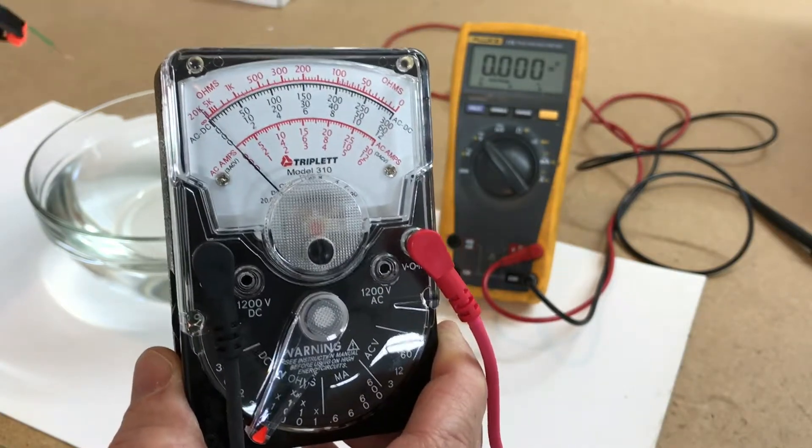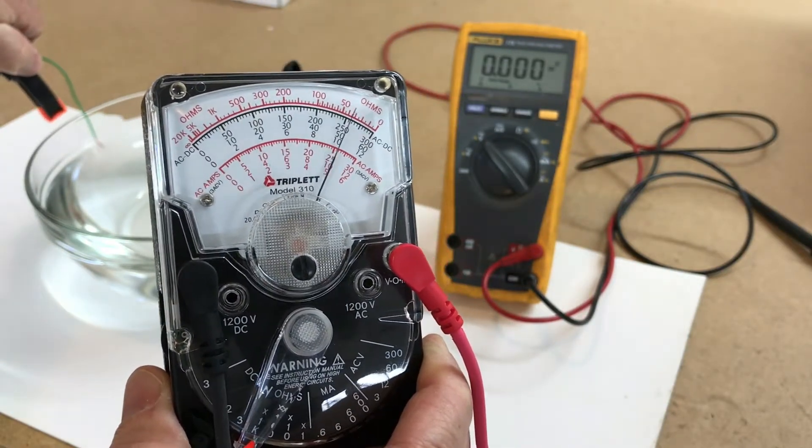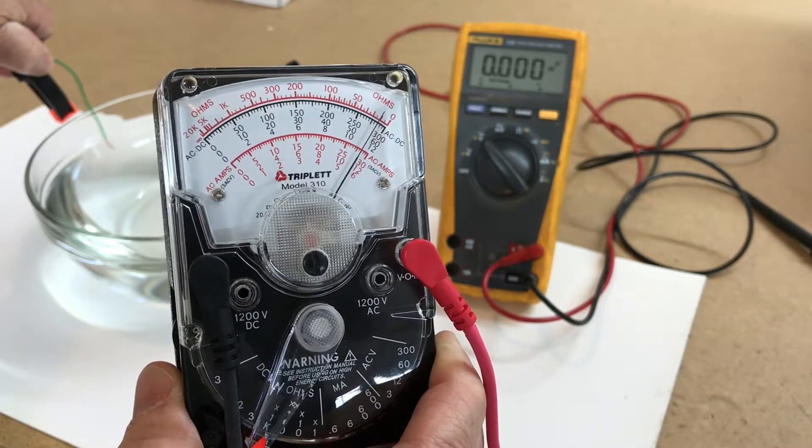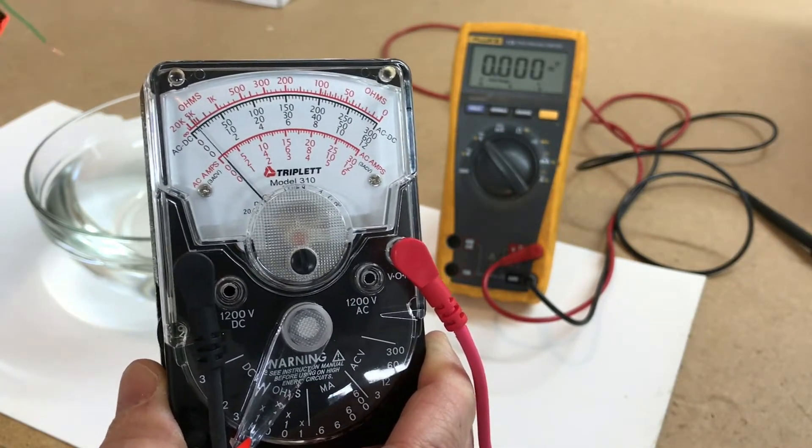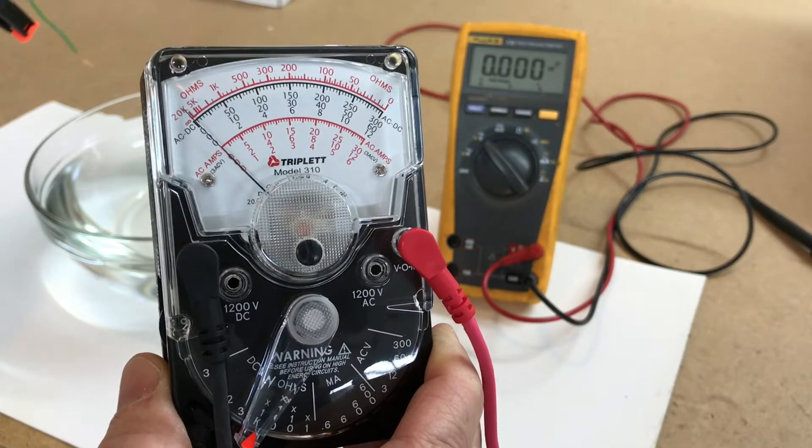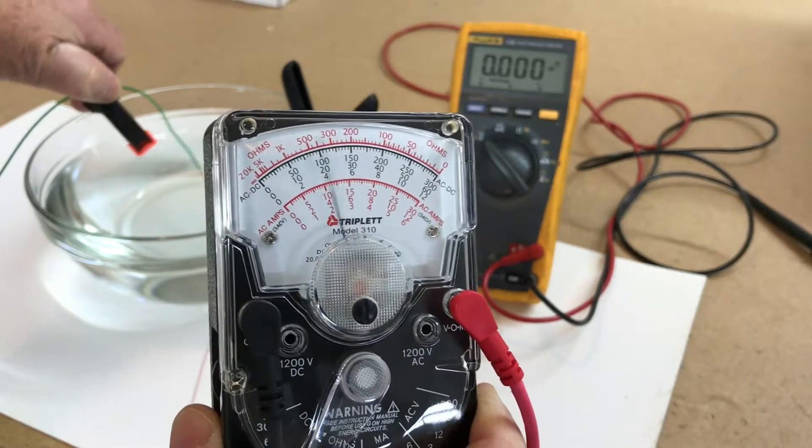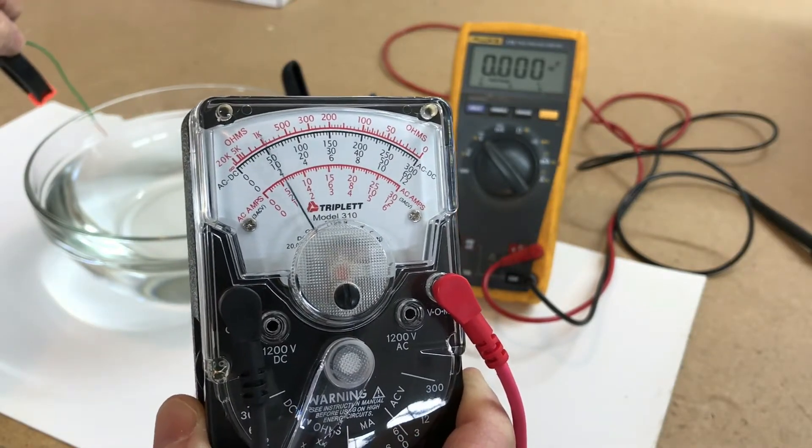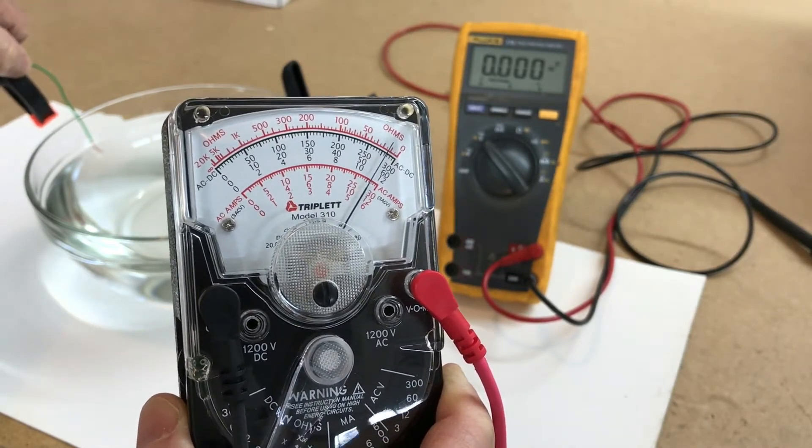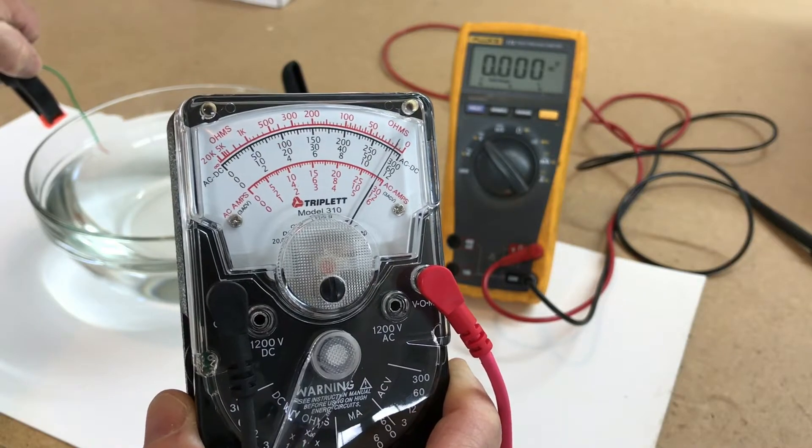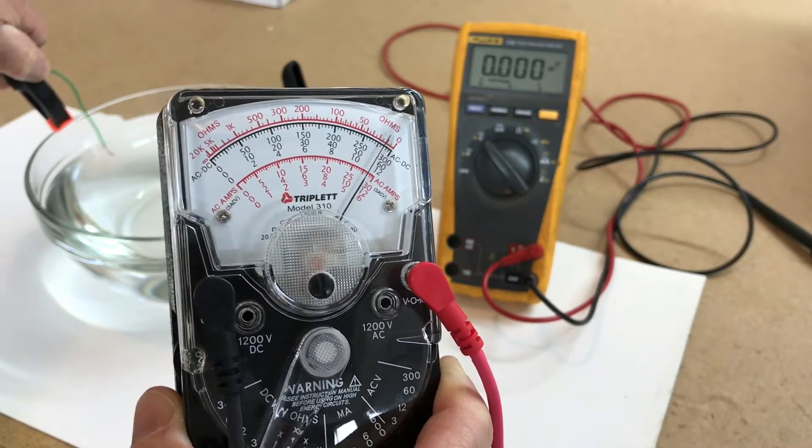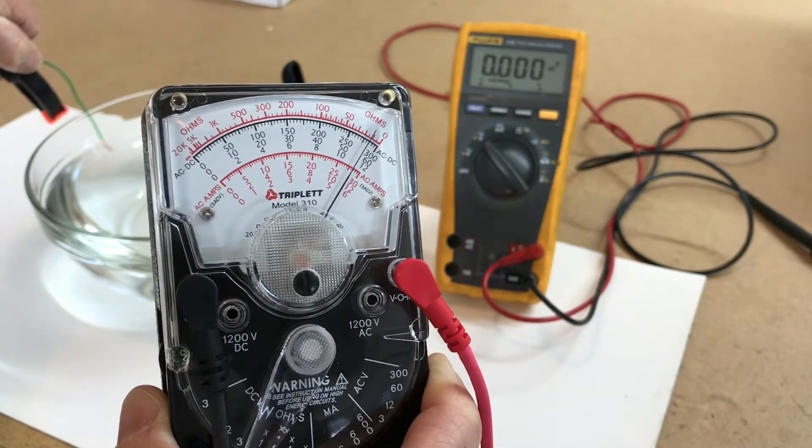So you can see the sensitivity on this where it is reading continuity through a bowl of water. Now if this bowl was ground or metal building steel and this was water, then this is how we transfer ground through a junction box or a device that has water in it.